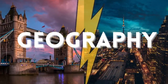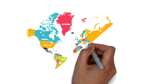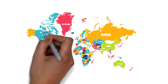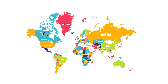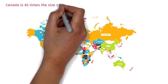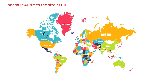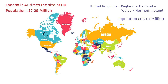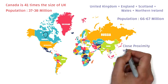Let's start with the geography. We're not going to discuss this in too much detail, but we'll cover the key points. On the world map, you can see that UK is very small in comparison to Canada — Canada is actually 41 times the size of UK. But interestingly, Canada's population is close to half of UK's: Canada has around 37 to 38 million people while UK has around 66 to 67 million. UK means United Kingdom — England, Scotland, Wales, and Northern Ireland.